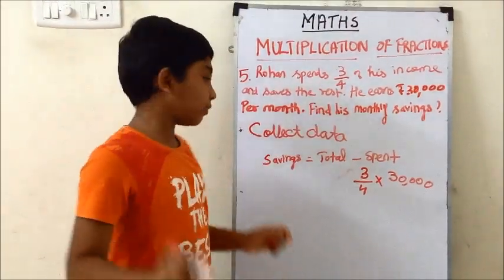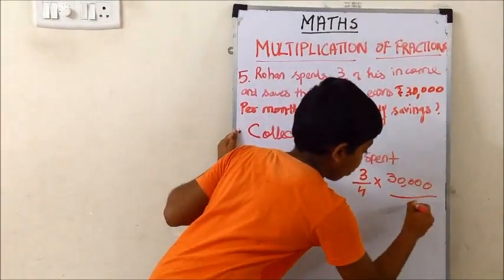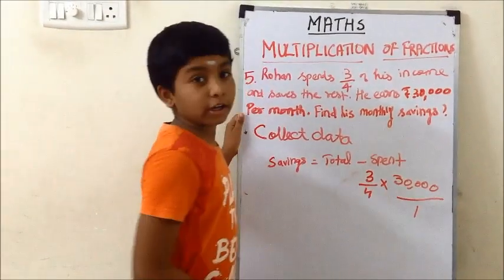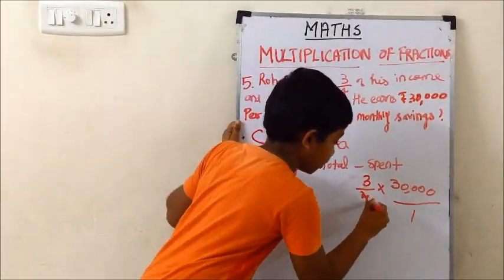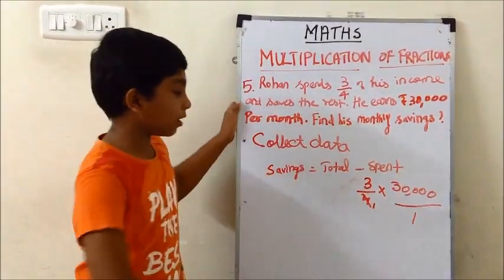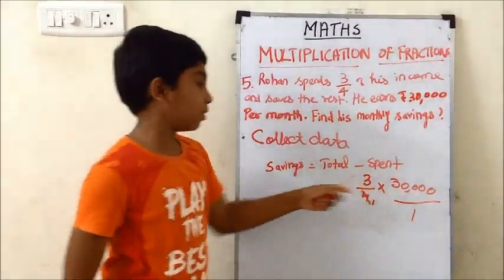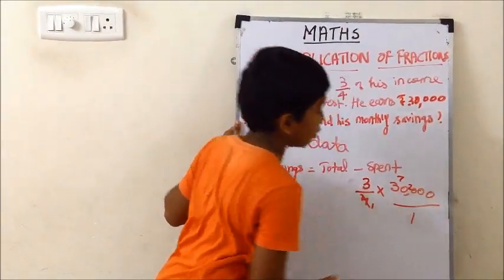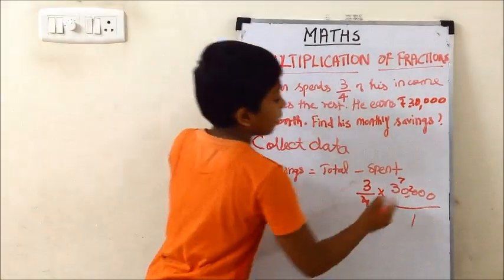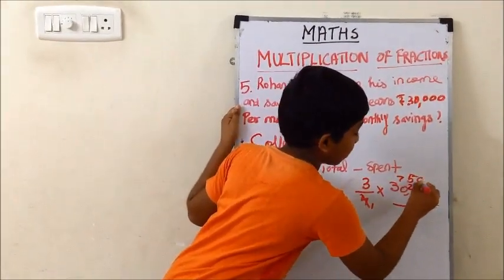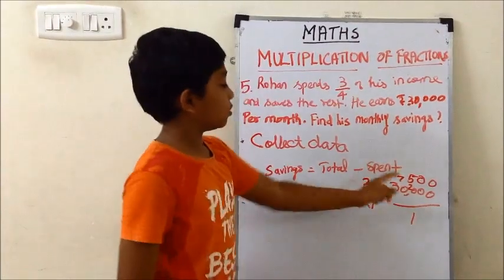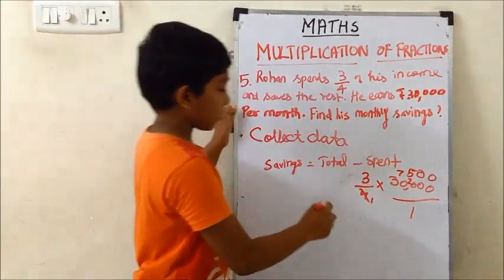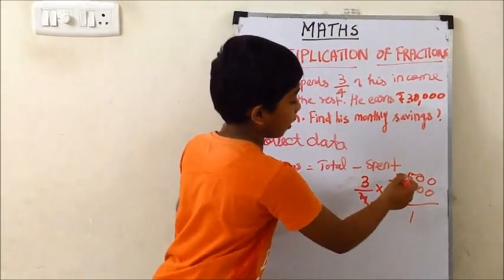30,000 has no denominator so we write it as 1. Using the cut-short method, in the 4 times table, 4 divides into 30,000. We simplify: 30,000 divided by 4 gives 7,500. So now we have 7,500.